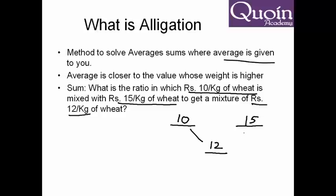In alligation you just subtract the values. You do 12-10 which comes to 2, you write it this side. 15-12 which comes to 3, you write it this side. So if you look at it, the ratio that will mix the two quantities is 3 is to 2. You use more quantity of 10 and less quantity of 15, which you can also make out because the average is closer to 10. The same concept: average is closer to the value whose weight is higher.